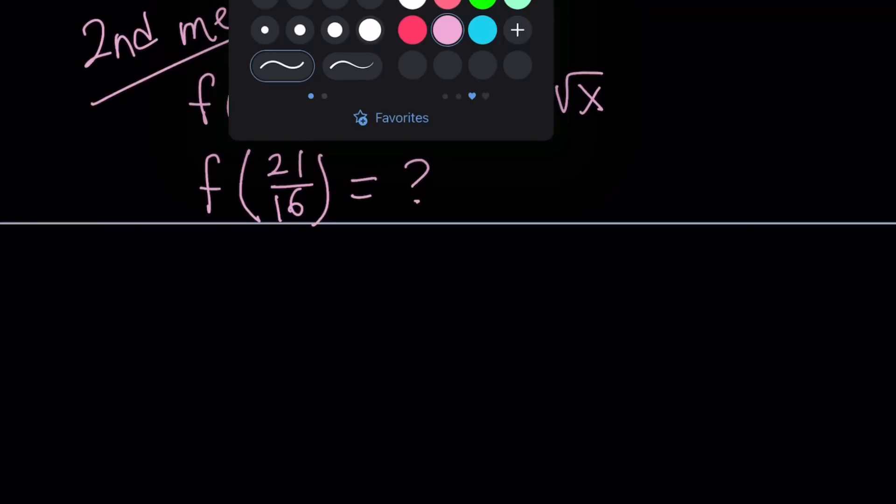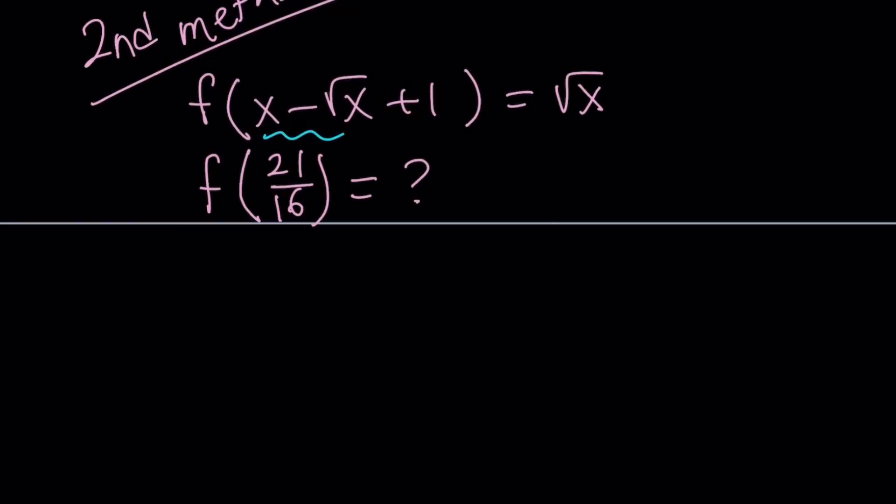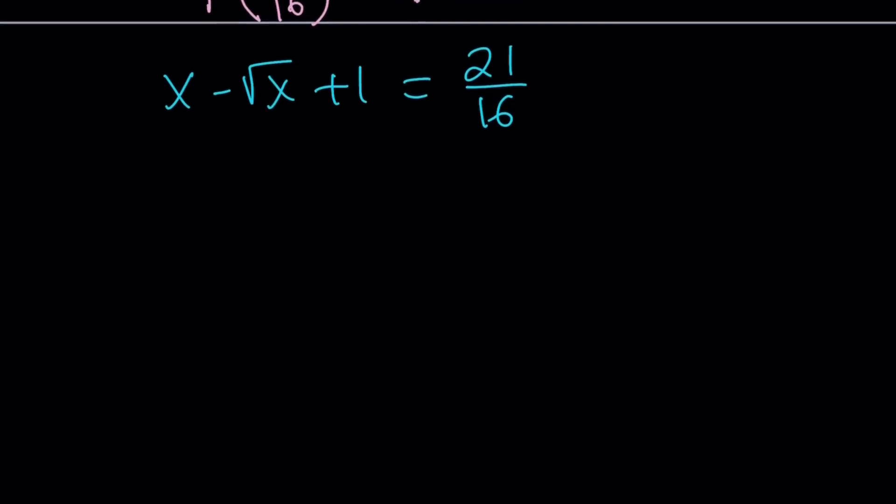So wouldn't it be reasonable to set this whole thing inside the parentheses equal to 21 over 16? It would totally make sense. x minus square root of x plus 1 equals 21 over 16. And whatever the x value I find, I'm going to substitute that here, and that'll give me the answer. Make sense? Pretty straightforward.